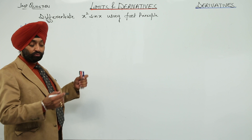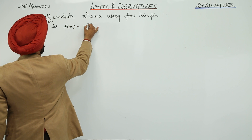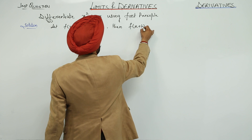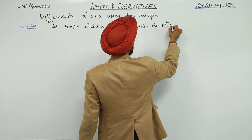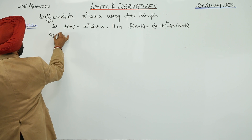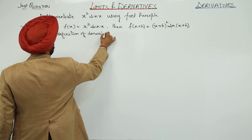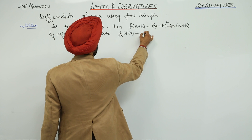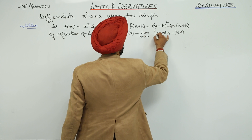Let us differentiate x squared sin x using first principle. Let f(x) = x² sin x, then f(x + h) = (x + h)² sin(x + h). By definition of derivative, d/dx of f(x) is equal to limit h approaches to 0, f(x + h) minus f(x) upon h.